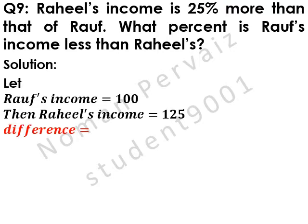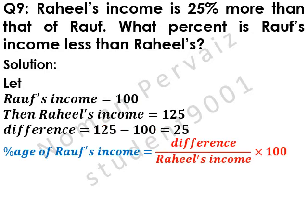Then, the difference is equal to 125, which is the larger value, minus 100, which is the smaller value. 125 minus 100 becomes 25.